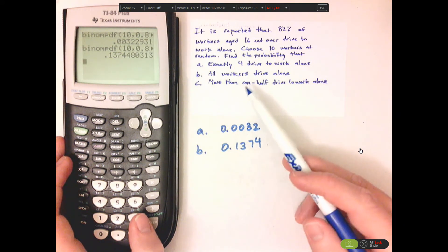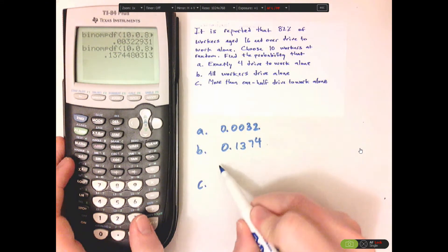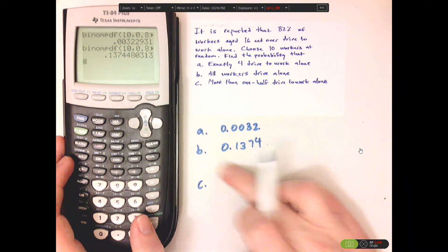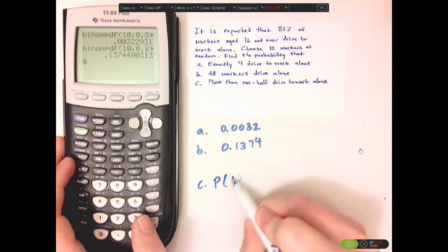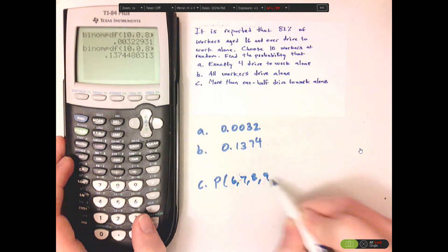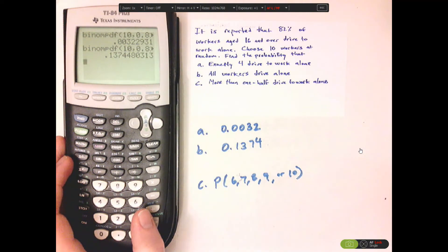Now, more than half is kind of tricky. So more than half would be 6, probability of 6, 7, 8, 9, or 10. Now, with cumulative, what it does is, does everything up to that value.